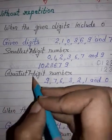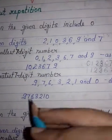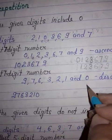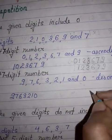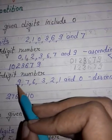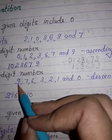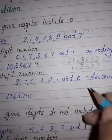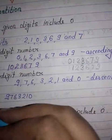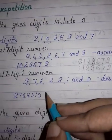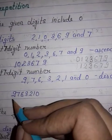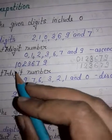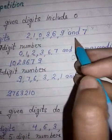Now for the greatest seven-digit number, we will arrange the given digits in descending order. Descending means from greater to smaller. So the arrangement will be 9, 7, 6, 3, 2, 1, and 0. Write these numbers as they are in this order, and the greatest number will be 97,63,210. This is the greatest seven-digit number formed by these digits.